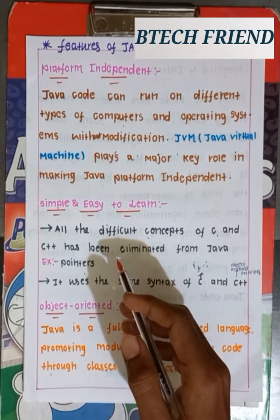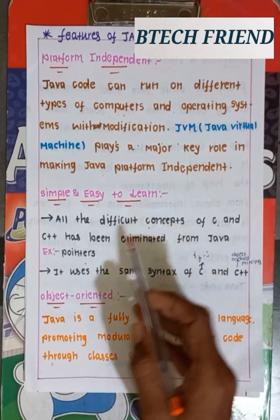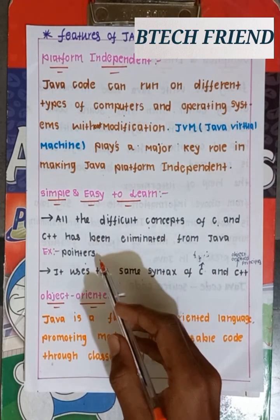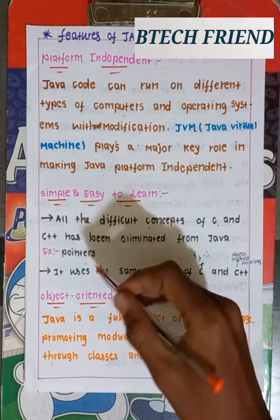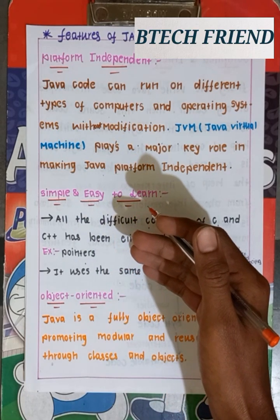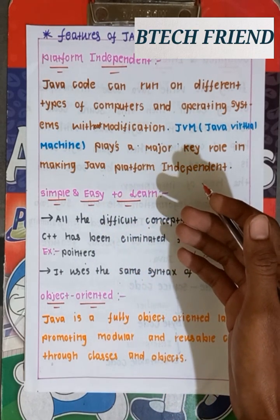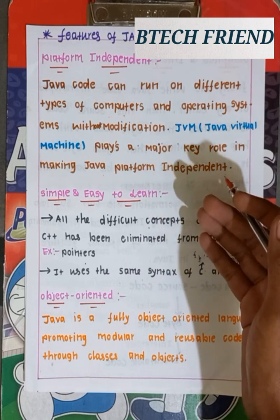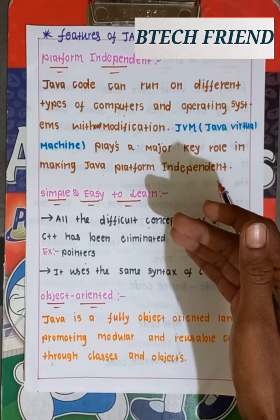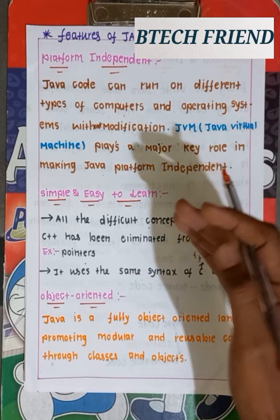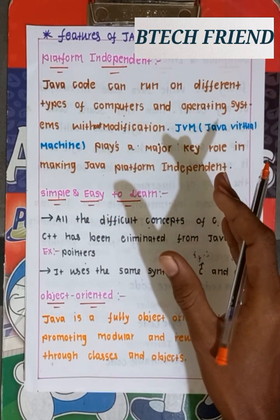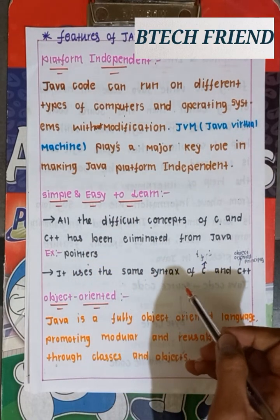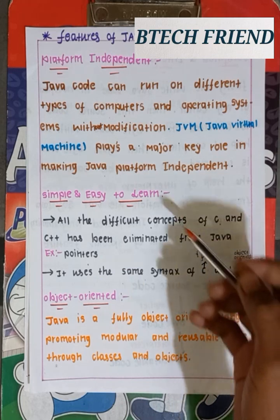Java is simple and easy to learn. All the difficult concepts of C and C++ have been eliminated from Java — for example, concepts like pointers have been removed.